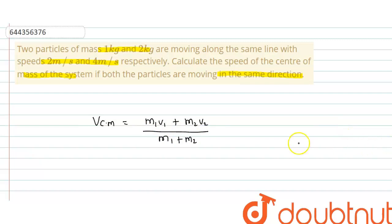So m1 is given, m1 is 1 kg, 1 kg into v1 is 2, plus m2 is 2 kg and v2 is 4, divided by m1 plus m2, 1 plus 2.